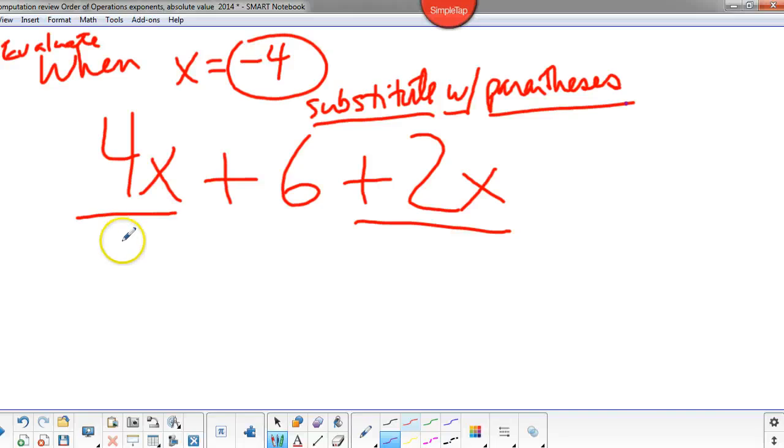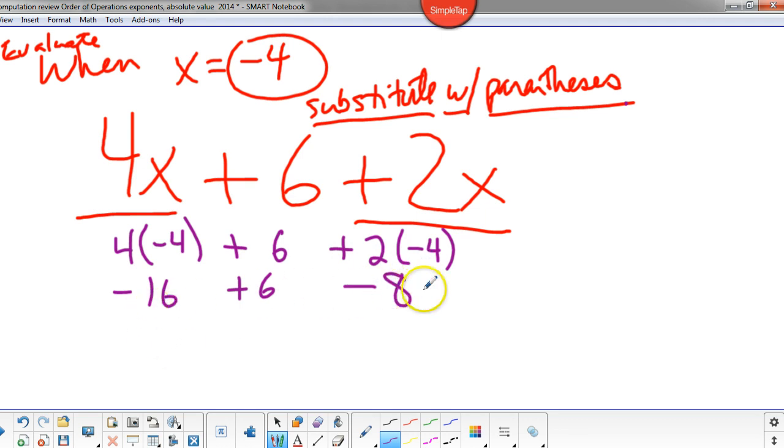Okay, so if we substitute in with parentheses, I have something like this. And then I'm going to evaluate means I'm going to do all the order of operations possible here. So I do the multiplication first, plus negative eight. I'm just going to write minus eight. And then I'm going to add them in any order I want. Negative ten plus eight is negative eighteen. So hopefully add negative eighteen.